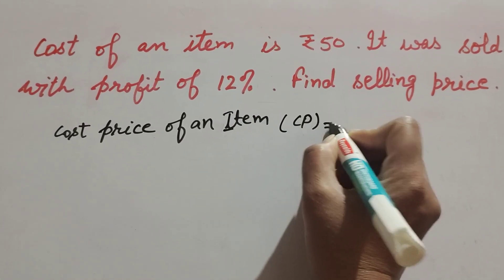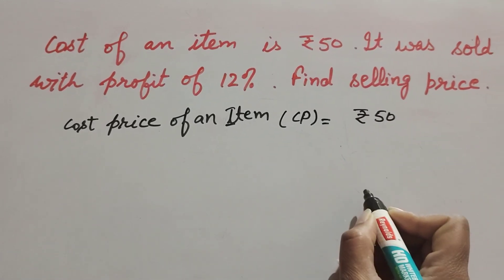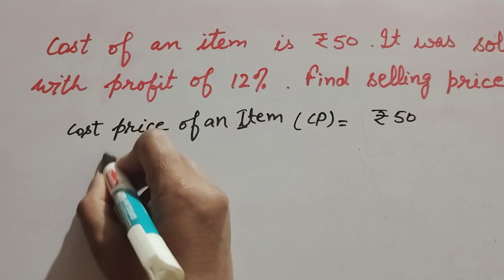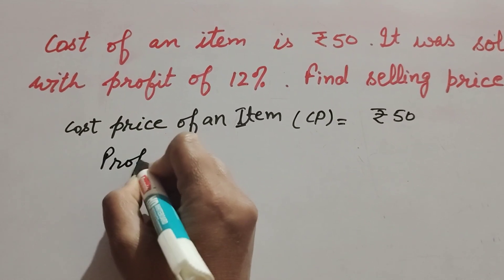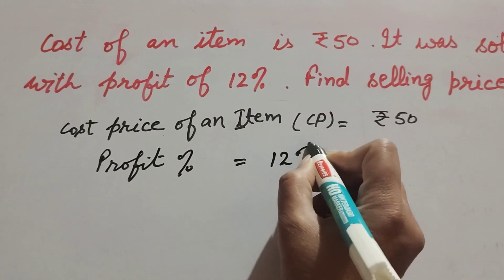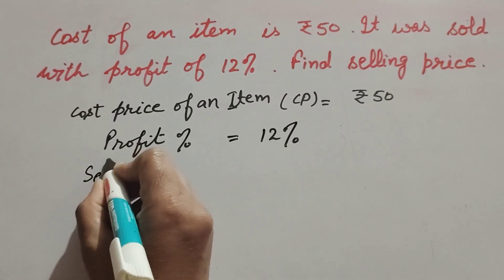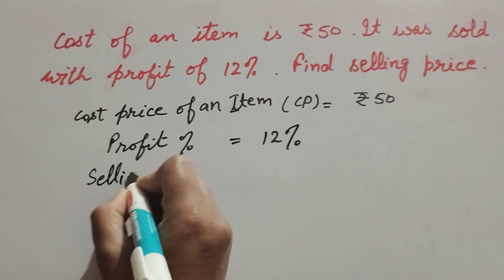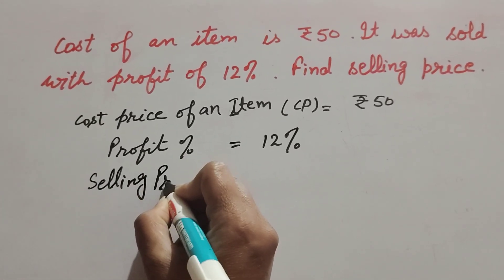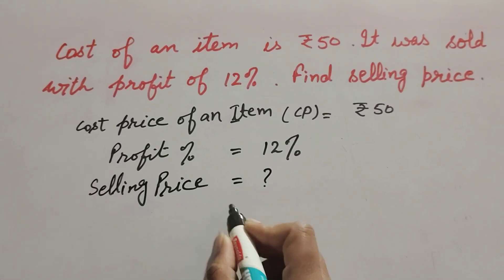Profit percentage is equal to 12%. This is given. We find the selling price—that we have to find. So we know the formula to find selling price.